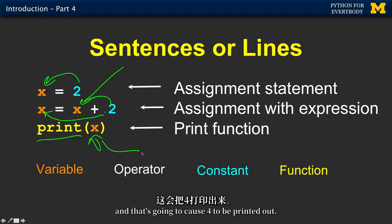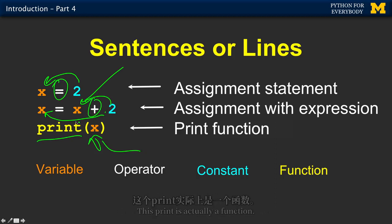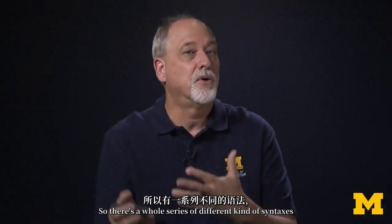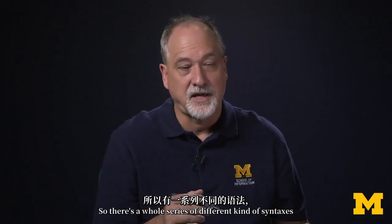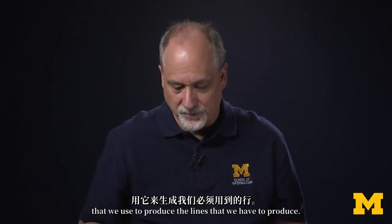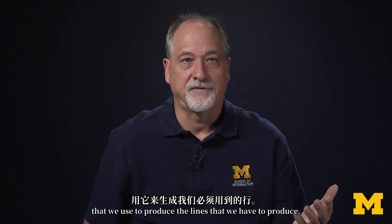Retrieving that two back, adding two to it, and sticking that sum back into x. Print is a function, and there is a parameter x, and that's going to cause four to be printed out. This plus is called an operator. The equal sign is an operator. This print is a function. This is a parameter being passed into the function.